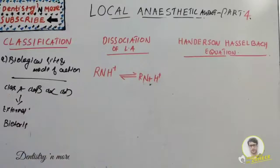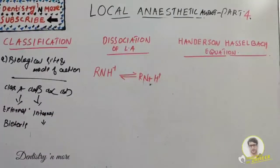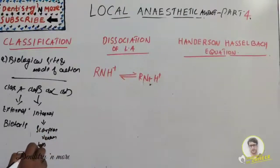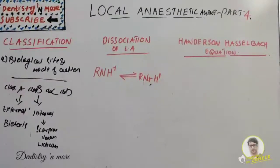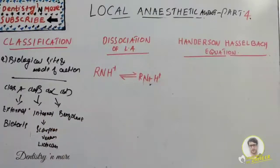Class B: agents acting on receptor sites on the internal surface of the nerve membrane. Examples are lidocaine and scorpion venom. Lidocaine refers here to quaternary ammonium analogues of lidocaine. Class C: agents acting by receptor-independent physiochemical mechanism — the example is benzocaine.